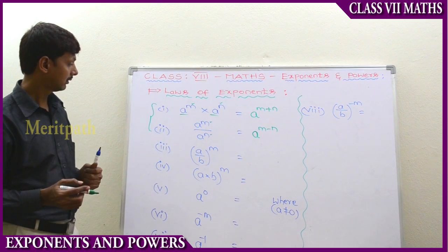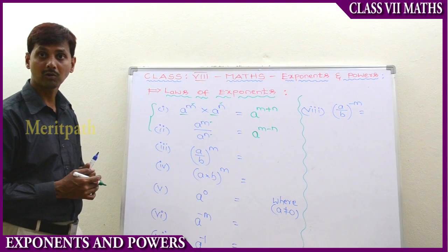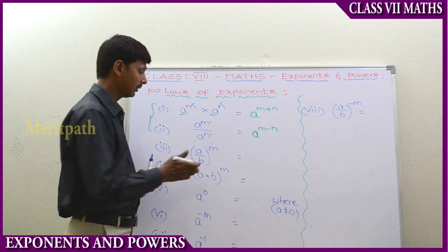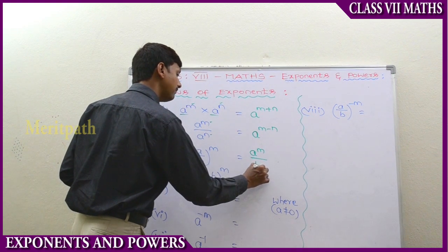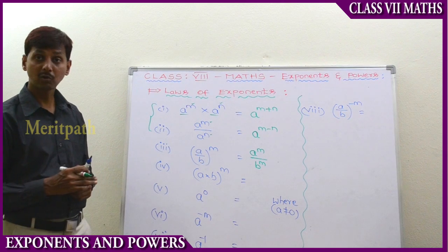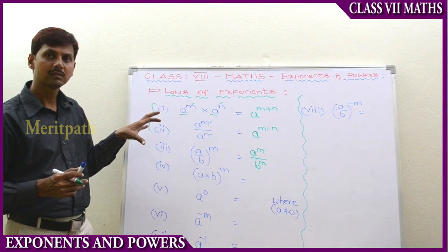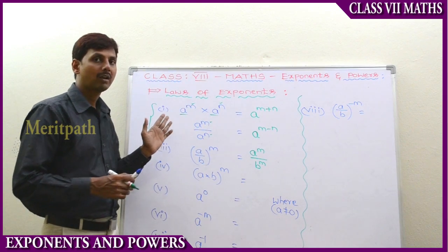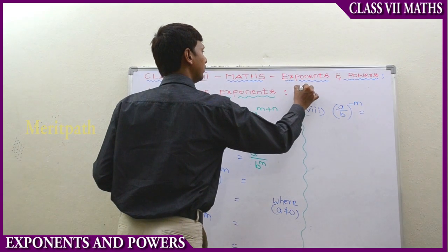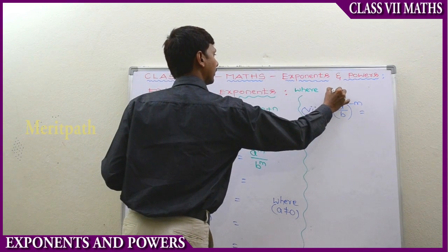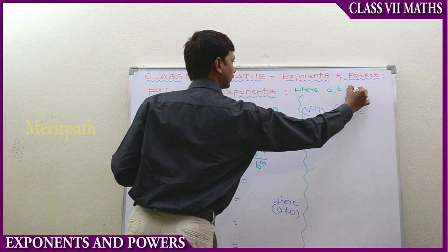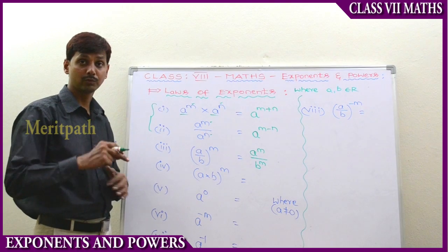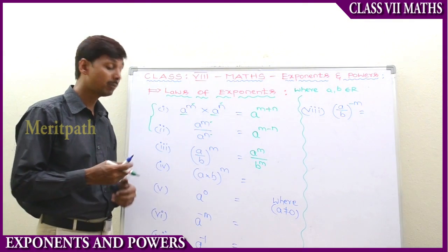Let's go to the next one: a by b to the power of n, and a into b to the power of n. The exponent n belongs to both the numerator and denominator. So we can write a by b whole to the power of n as a power n divided by b power n. For all these laws of exponents, a and b are any real numbers.